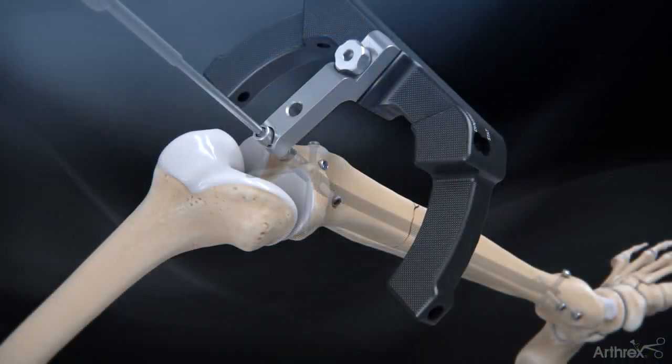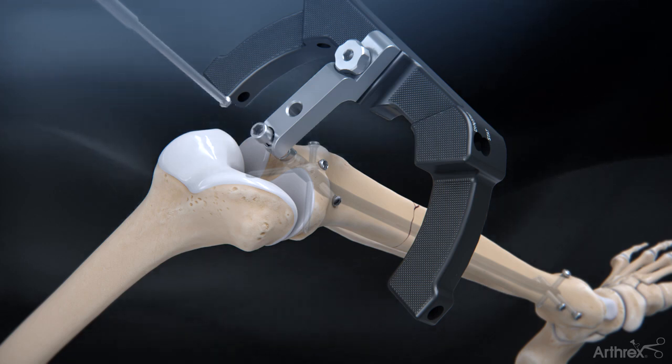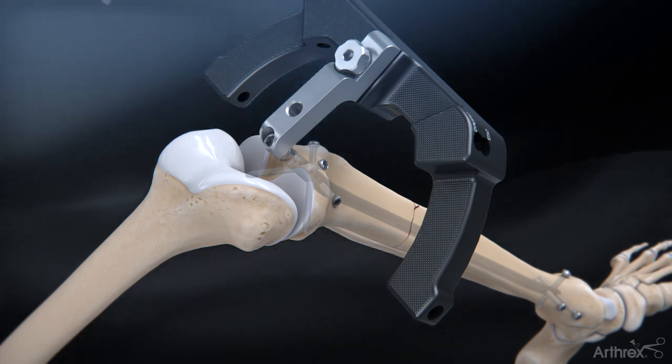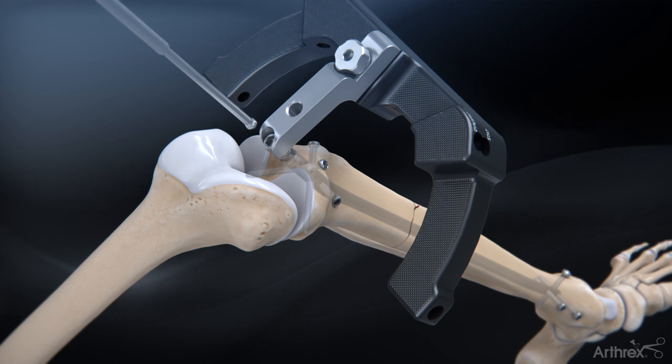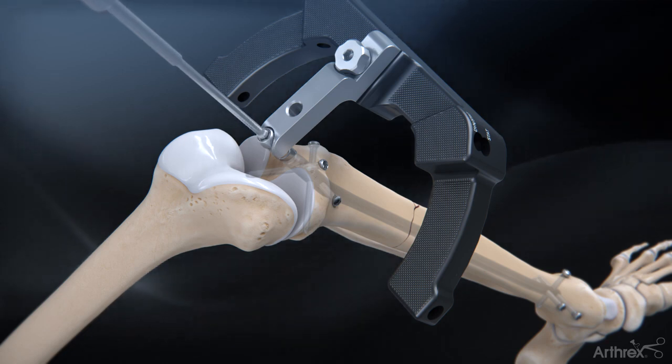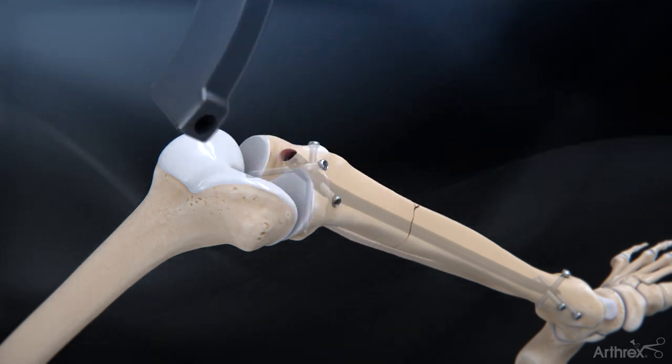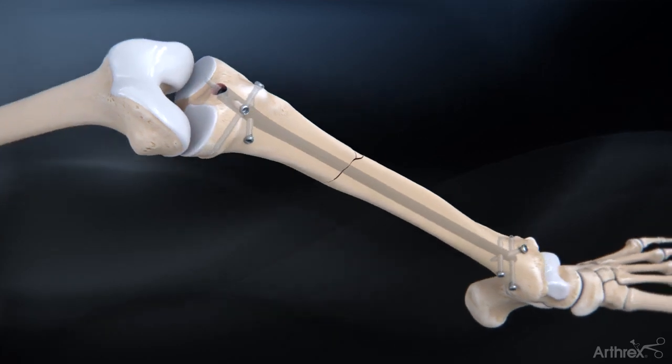Unthread and remove the compression bolt using the hex driver. Unthread the locking bolt using the ball hex driver and remove the targeting arm assembly to complete the procedure.